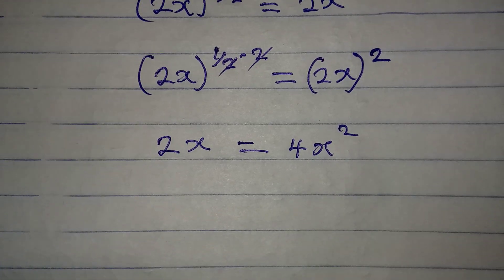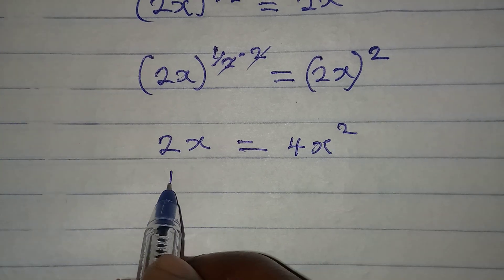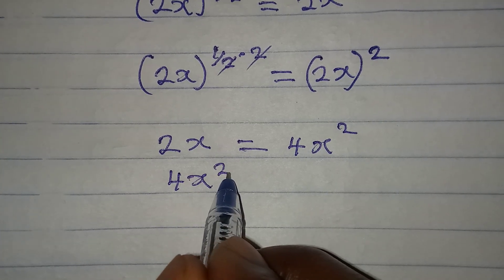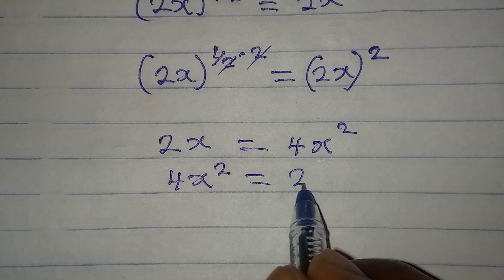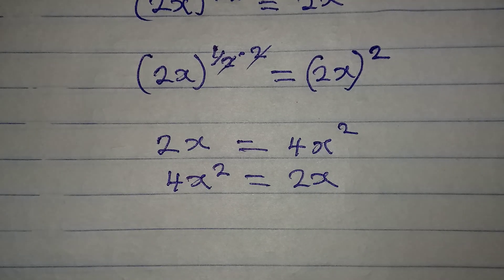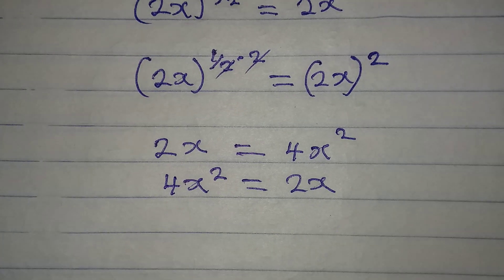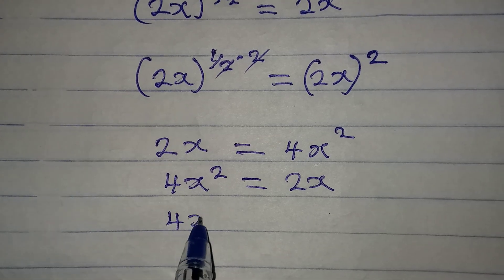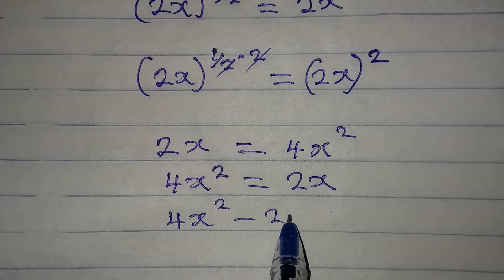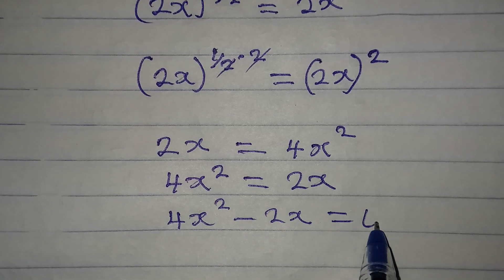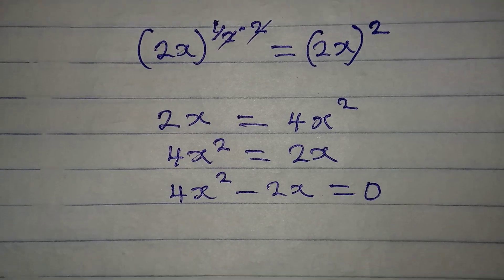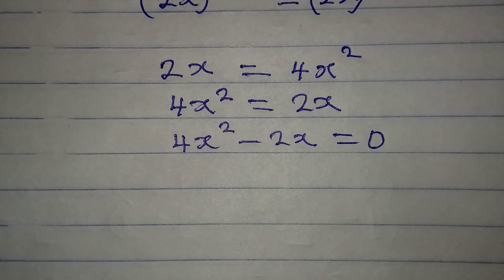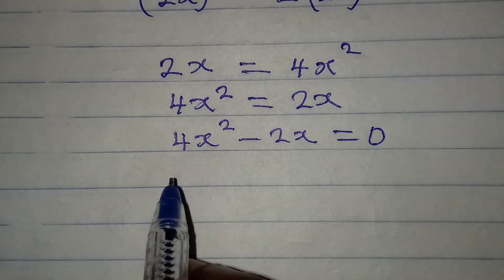Simple, isn't it? And then from here, 4x squared should be equal to 2x. Now bring everything to the left-hand side, so 4x squared minus 2x will be equal to zero.